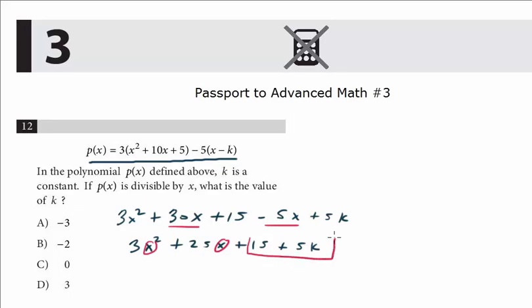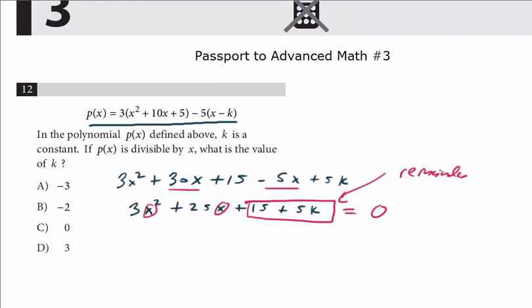What is left does not divide into x. Obviously, x can't divide into 15 or 5k. But this whole equation will be equal to zero. We know that x divides evenly into 3x² and 25x. So what's left here is the remainder, and this question is just asking for k. The key is just recognizing that this remainder is left over.